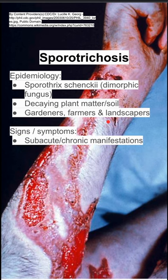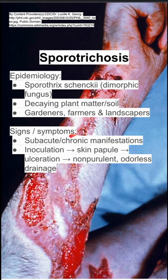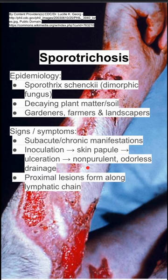The clinical presentation is as follows. It's usually a subacute or chronic presentation. It usually starts when the fungus is inoculated into the skin, which forms a skin papule. That papule then evolves into an ulceration, and it ends up seeping out this non-purulent, odorless drainage. You then have proximal lesions that form along the lymphatic chain leading back to the body.